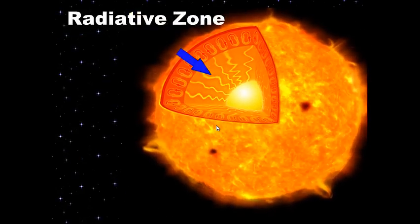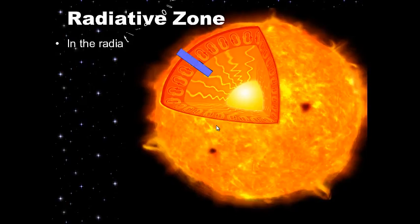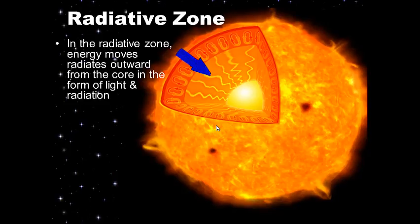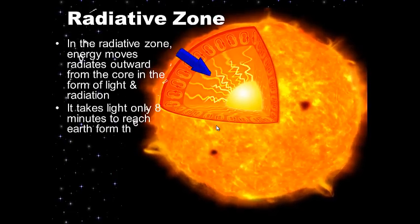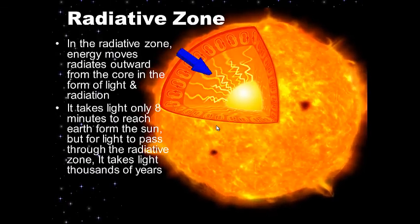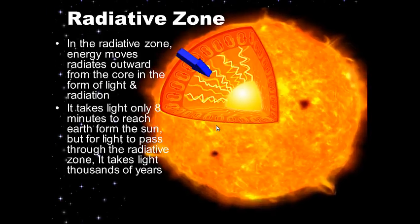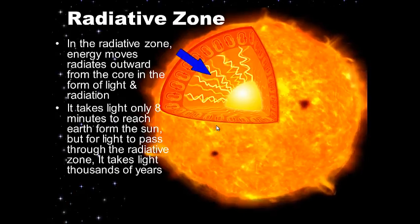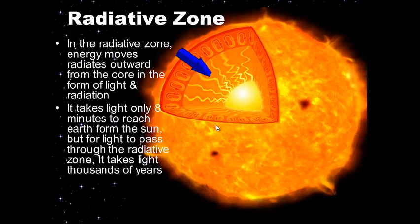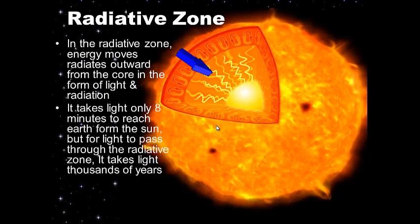Moving out from the core is the radiative zone. In the radiative zone, energy radiates outward from the core in the form of light and radiation. It takes light only eight minutes to reach Earth from the Sun, but for light to pass through the radiative zone it may take thousands of years — because the Sun's matter is so dense in this zone that light keeps hitting other atoms and bouncing backwards.